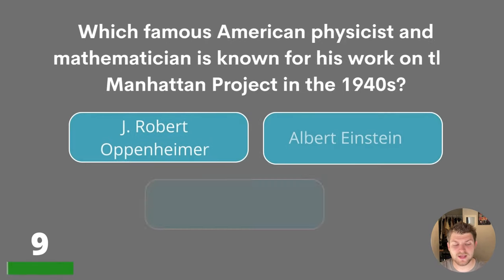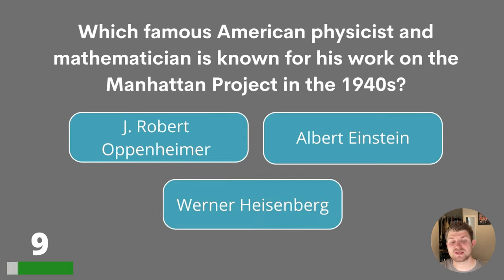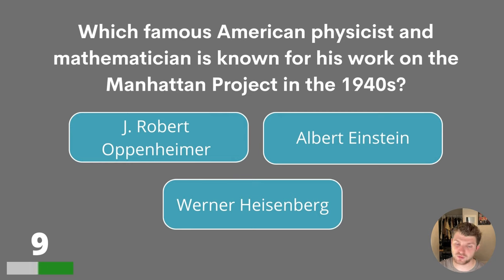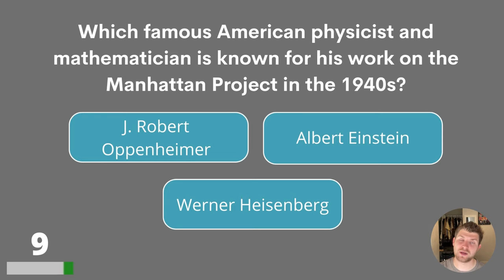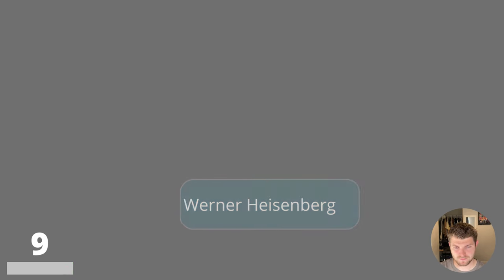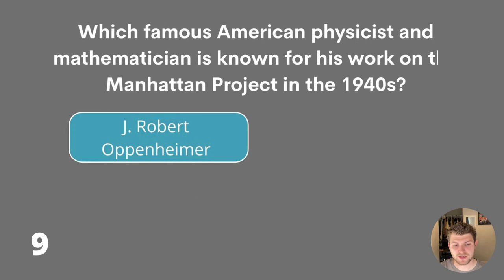Question nine. Which famous American physicist and mathematician is known for his work on the Manhattan Project in the 1940s? J. Robert Oppenheimer, Albert Einstein or Werner Heisenberg? The answer is J. Robert Oppenheimer.